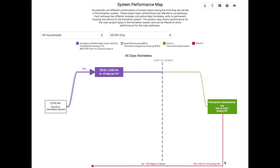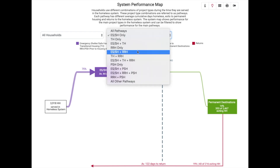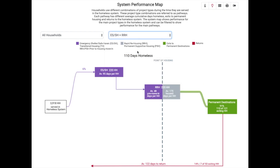You can take this detailed view for every service pathway in your community. For example, if you are interested in the outcomes of households in the emergency shelter to rapid rehousing pathway, you can select that from the drop-down menu. There is a specific flow chart for every service pathway in your system, complete with average number of days homeless, number of permanent exits, and rates of returns to homelessness.